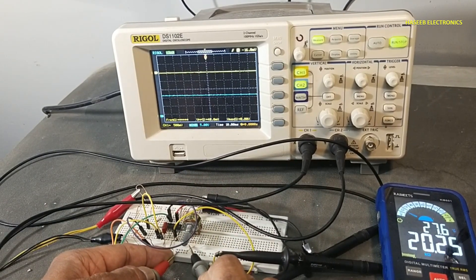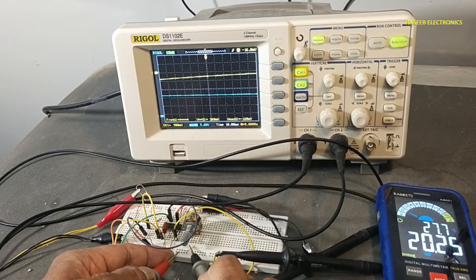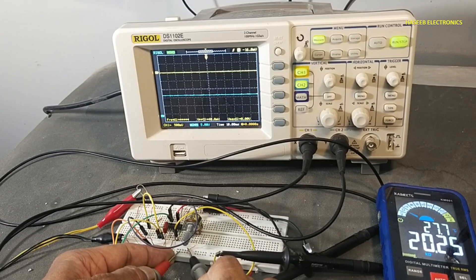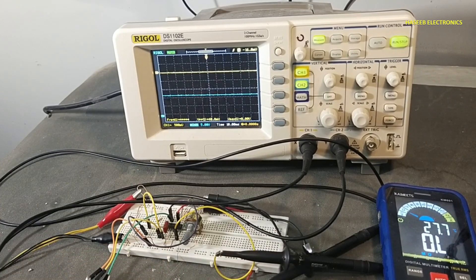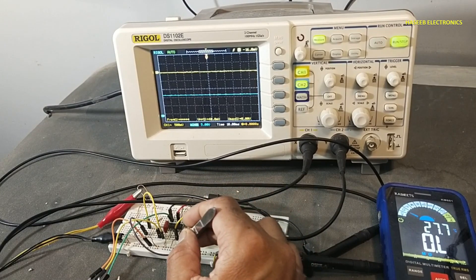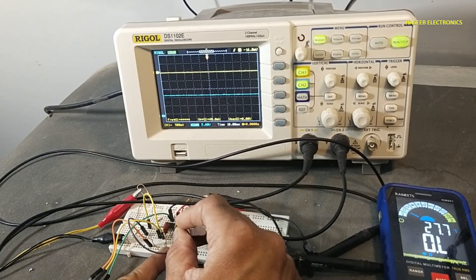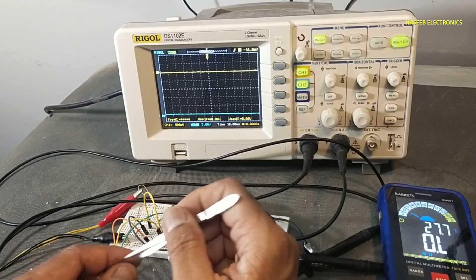If we check the resistor value this time, it is 20.25 kilo ohms, while our calculated value is 14.6 kilo ohm. Because when we are working at low frequency, we need to consider the variation of the frequency using frequency chart.